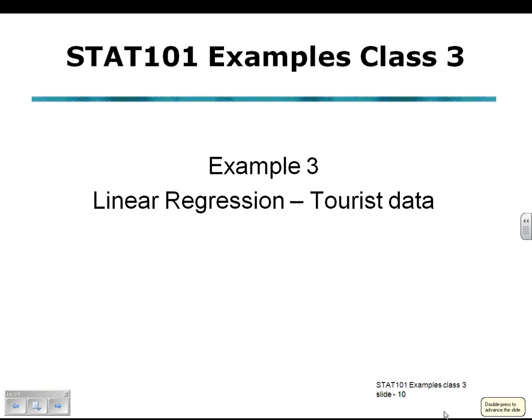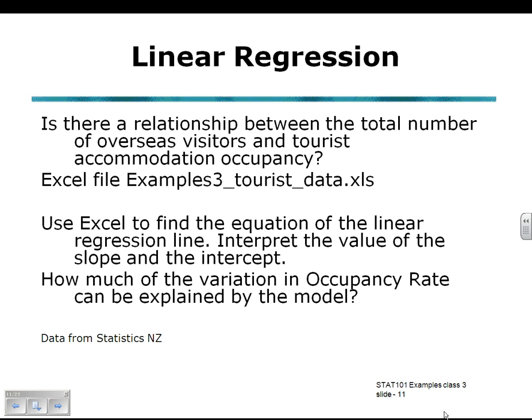Example 3 in STAT101 examples class 3, linear regression using the tourist data. The file is on the STAT101 web page. The question: is there a relationship between the total number of overseas visitors and the tourist accommodation occupancy rate?